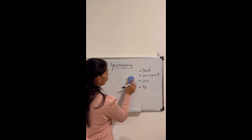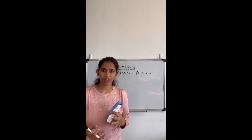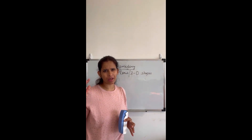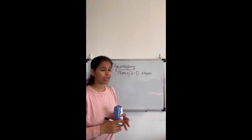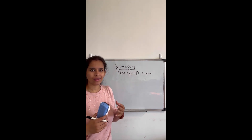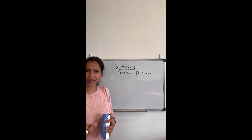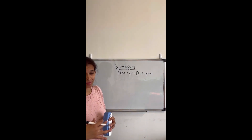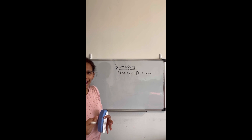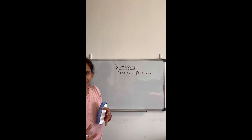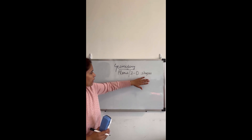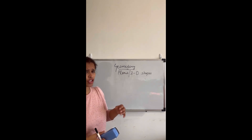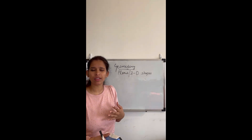Now we'll move on to planes and 2D shapes. Whenever the word 'planes' comes to mind, we think of airplanes, but in mathematics, planes means any shape that has length and breadth. A 2D shape has length and breadth but no depth or height.